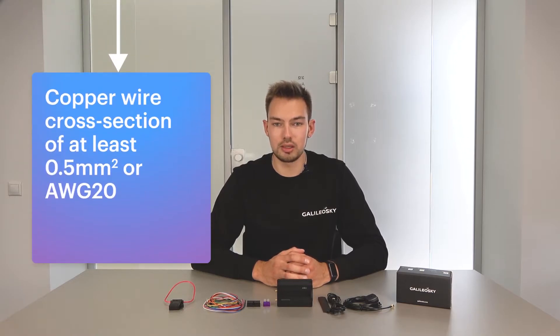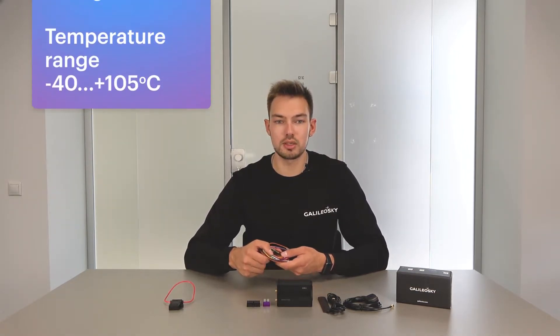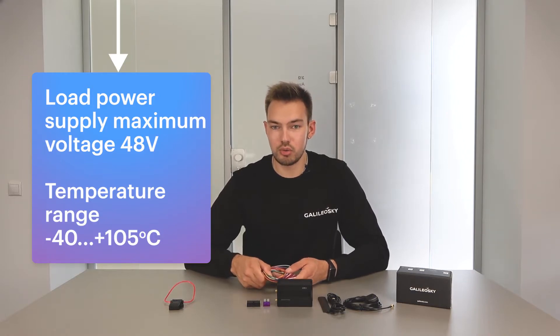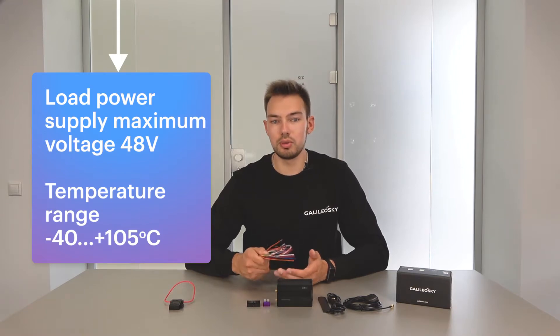If you need to use more device contacts, then you can always crimp and install additional wires in the block. We recommend using stranded copper wire at least 0.5 mm² or AWG20. The supplied wires allow you to connect the device with the supply voltage of up to 48V. The operating temperature range of wires is from minus 40 to plus 105 degrees Celsius.